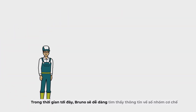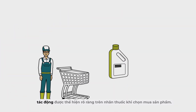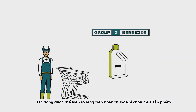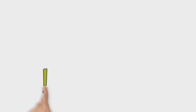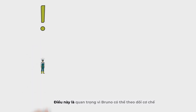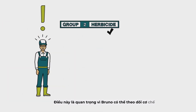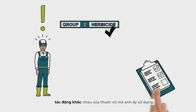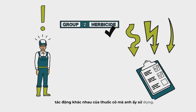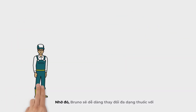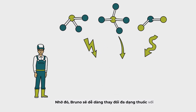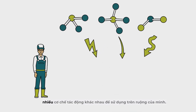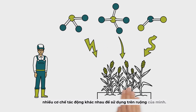Soon, Bruno will find that the herbicides he buys will feature a clear mode of action numerical code on their label. It's important for Bruno to notice this code so that he can track the various modes of action he uses. Bruno will now easily diversify the modes of action of the herbicides he uses on his fields.